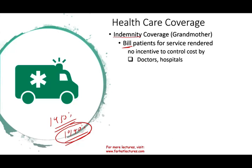Whether you really need an x-ray or MRI, they'll provide it. Patients had no deductible and paid no premium at work, so there was no incentive to control costs either. As a result, the cost of insurance went up. Companies could no longer afford to pay insurance alone, which is where premiums came in. My grandmother wouldn't know what a premium or deductible is because the insurance was indemnity coverage. Eventually, inflation and unlimited coverage drove the need for a new approach, which introduced capitation coverage.